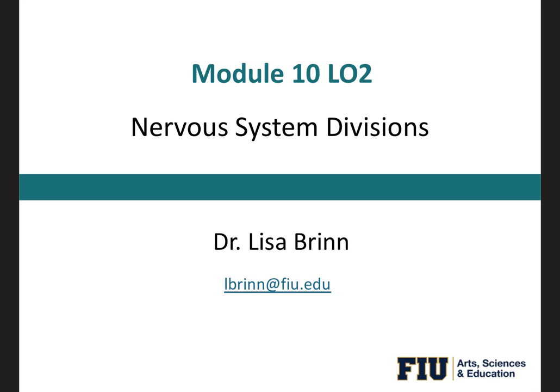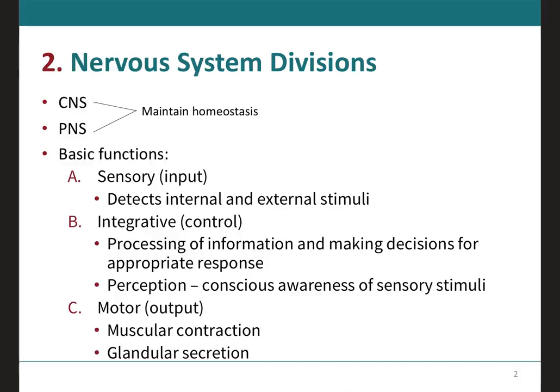Moving along to learning outcome number two, we're going to be talking about the nervous system divisions. We already mentioned on the previous learning outcome how the nervous system consists of these two major divisions, which are the central nervous system and the peripheral nervous system.